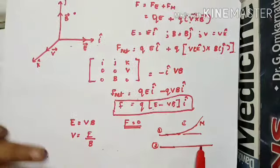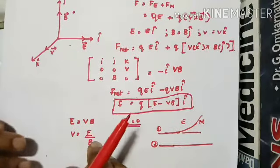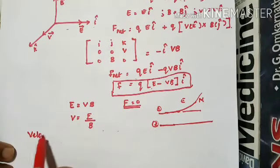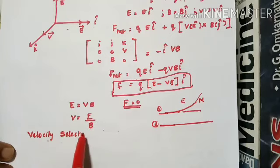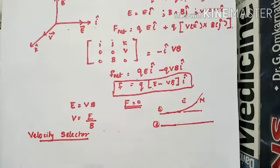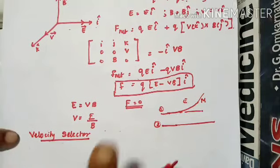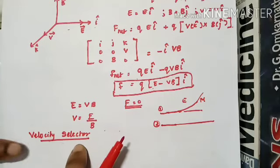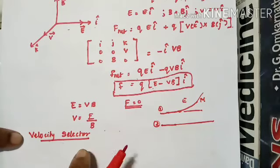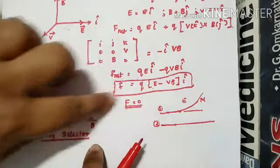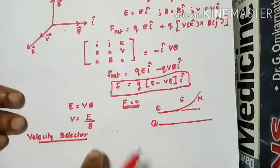Using this condition — V = E/B — we arrive at the concept of a velocity selector. A velocity selector is a device which is used to select or pass through only charged particles having a specific constant velocity, based on the condition we just discussed.